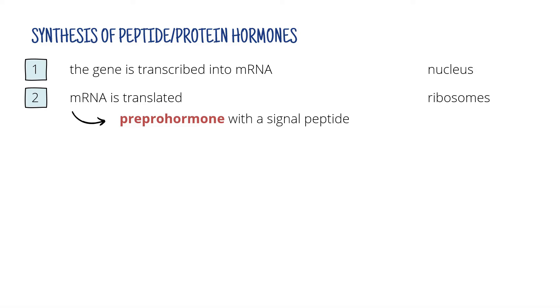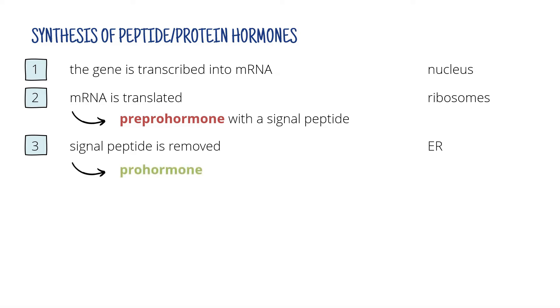The preprohormone then travels to the endoplasmic reticulum. Here the signal peptide is removed and we now talk about the prohormone.